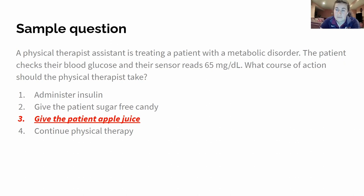They need glucose and they need it now. Give the patient apple juice — that's right on the money. Any sort of sugar to help raise that blood sugar above that 70 mark, so we're back in that healthy, workable range.